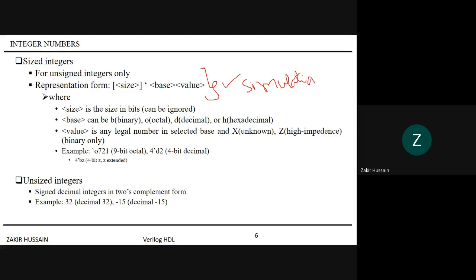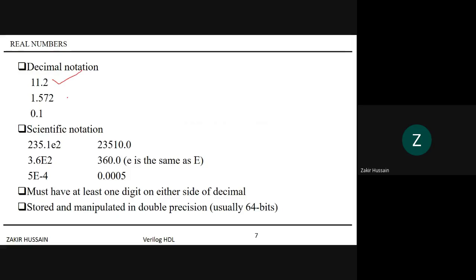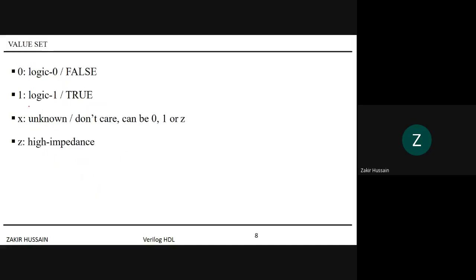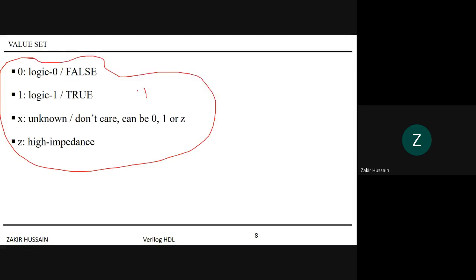Real numbers and scientific notation are also supported and will be demonstrated with examples practically. Importantly, Verilog supports a total of four value sets: 0, 1, X (unknown), and Z (high impedance state). Any signal in Verilog can hold only one of these four values.